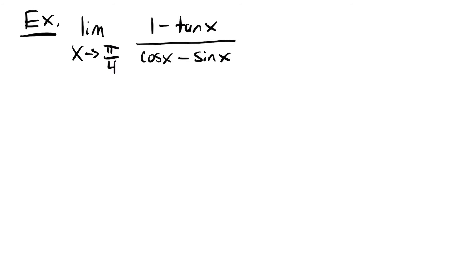Now we're going to look at the limit as x approaches pi over 4 of 1 minus tangent x divided by cosine x minus sine x. This limit is a little off the trail from what we've been doing before, because before we were looking at our special limits where x approaches 0, but in this case x is approaching pi over 4, so we can't use our special limits — this is just a regular limit involving trig functions. The first thing you always do with a function like this is plug it in and see what happens.